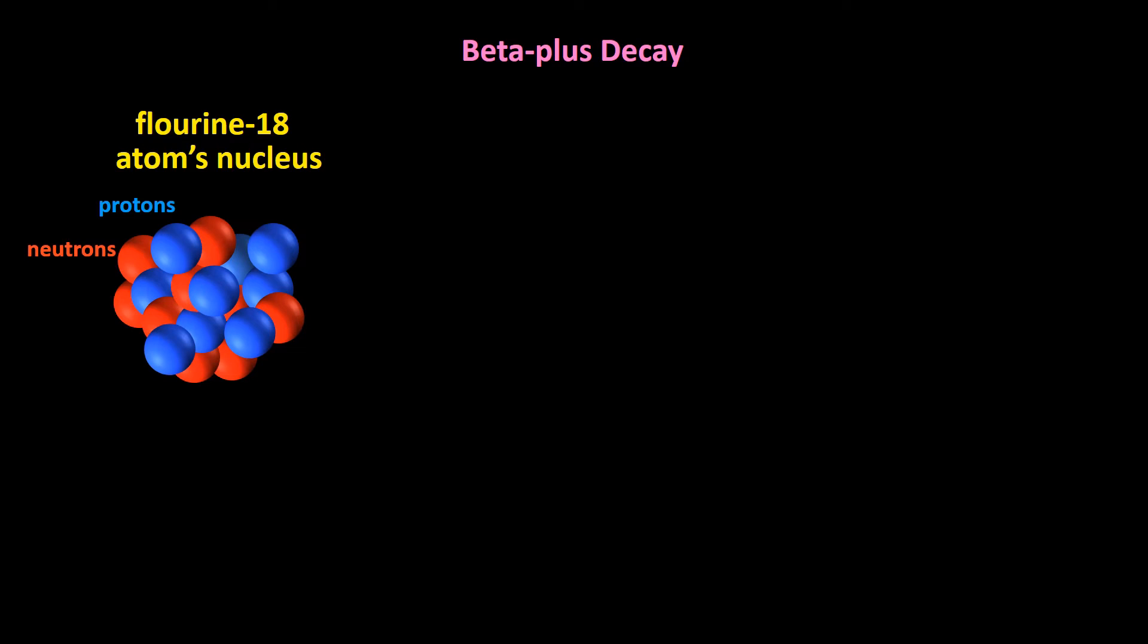However, there's another type of beta decay called beta plus decay, where a proton spontaneously converts into a neutron and an electron that has a positive charge. Yes, you heard that correctly, an electron that has a positive charge. So, let's look at an example.